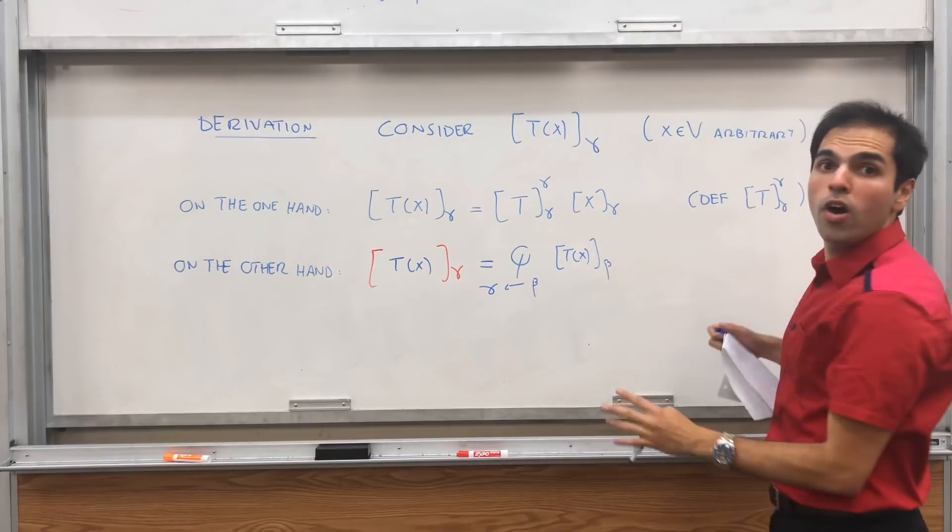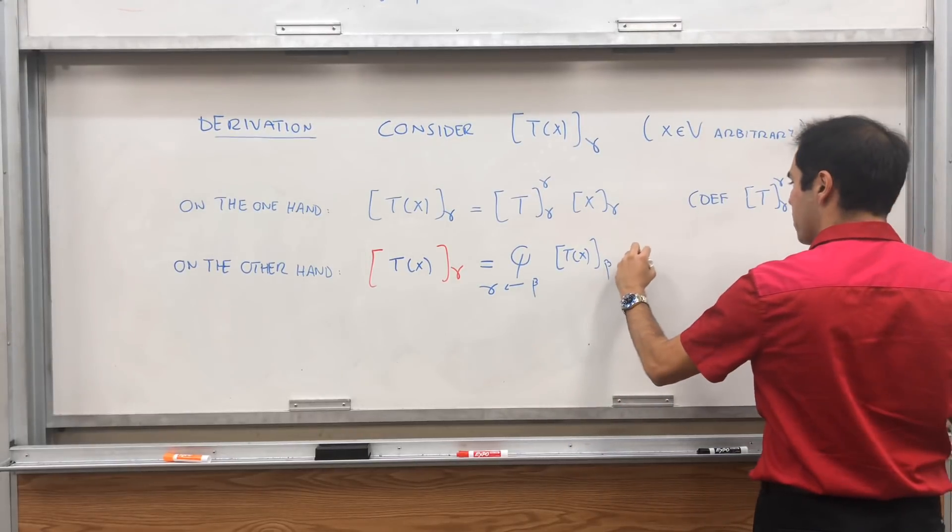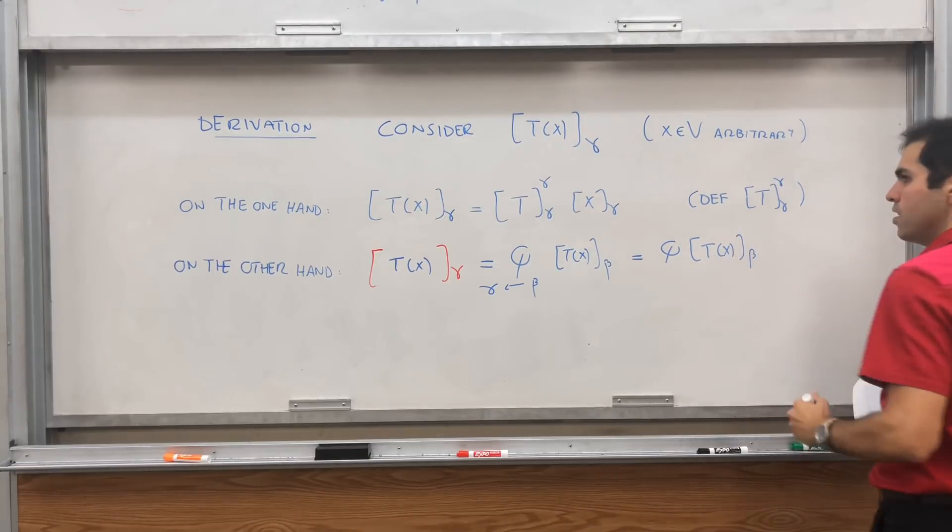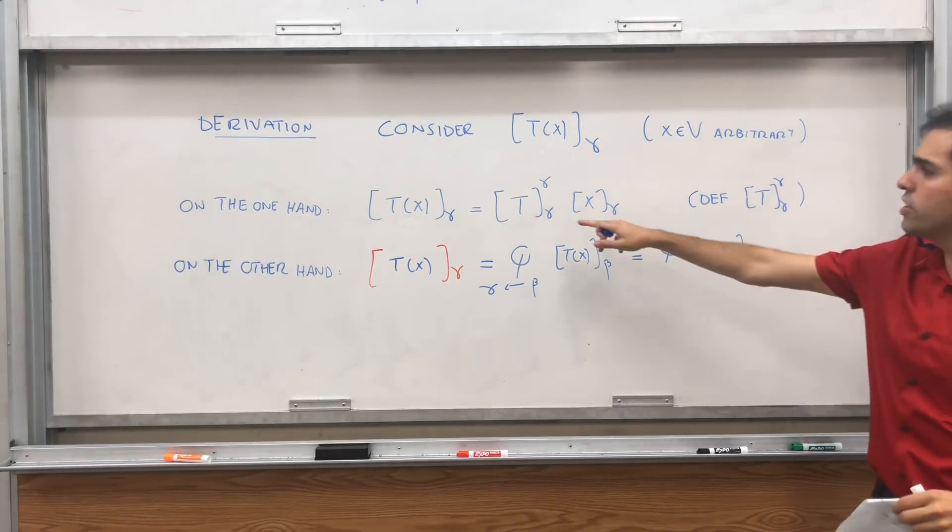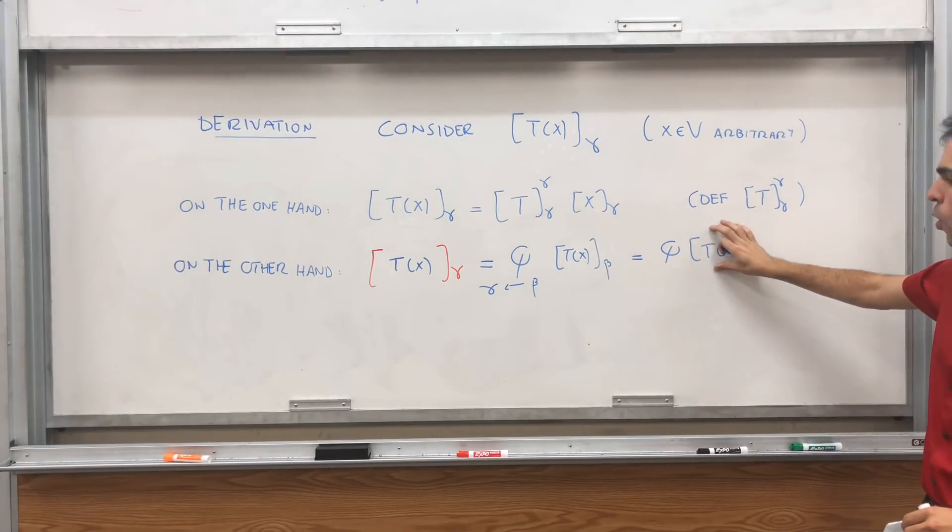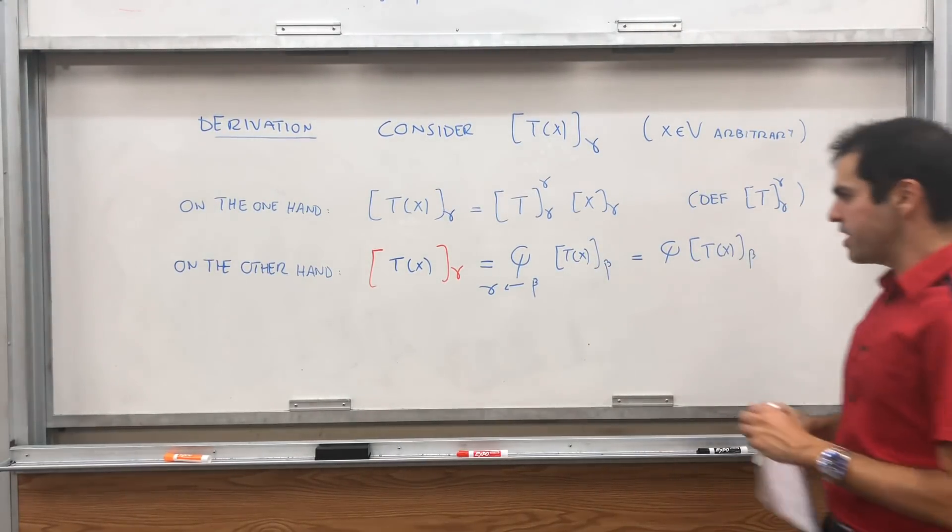That's from Q from beta to gamma, which from now on we'll just abbreviate as Q. So it's Q times T of X beta. But look, now we can just use the same trick as here.